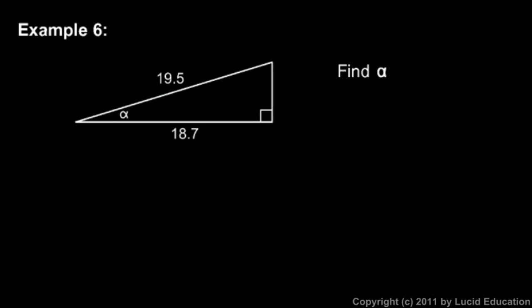Here's example six. We're told to find alpha. That's this angle right down here. And look what we're given: 18.7 is the side adjacent to alpha and 19.5 is the hypotenuse. And when you have the adjacent side and the hypotenuse, the cosine function comes to mind.